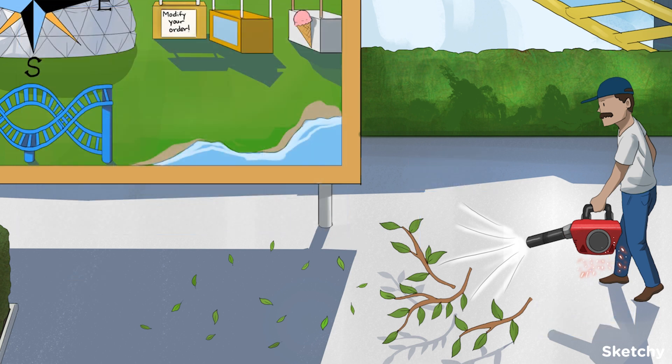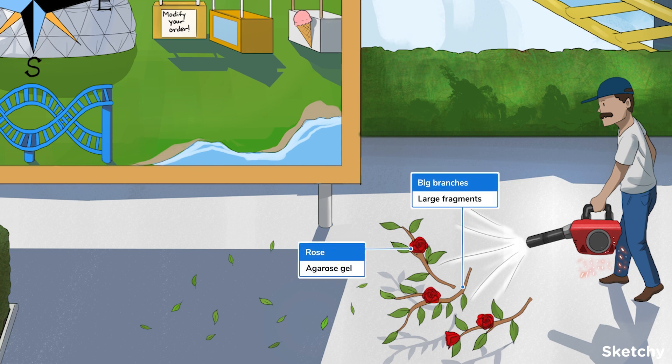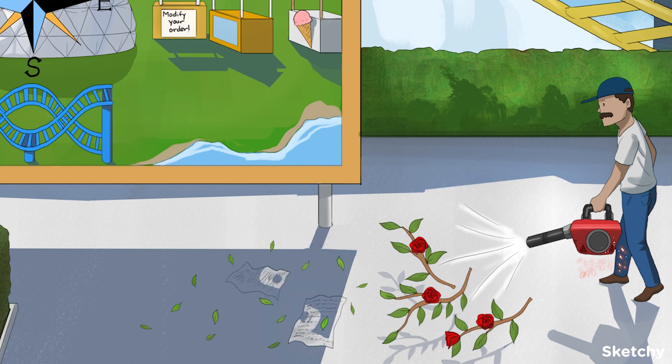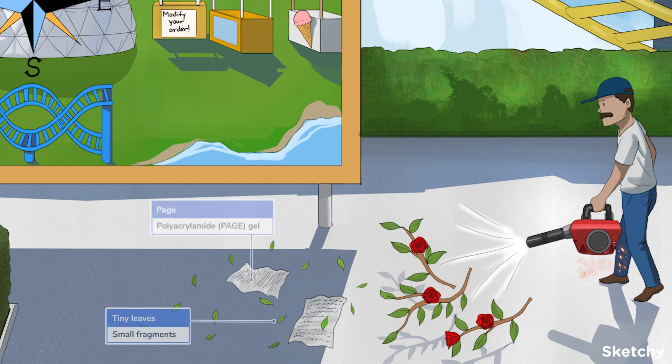Okay, some more points about gels. They're divided into agarose and polyacrylamide, or PAGE gels. Agarose gels have low resolving power. They're good at separating large fragments of nucleic acids and proteins. To remember that, we've added roses to the big branches. On the flip side, PAGE gels have higher resolving power, so they'll separate small fragments better. And here are some pages between the small leaves to remind you of that.